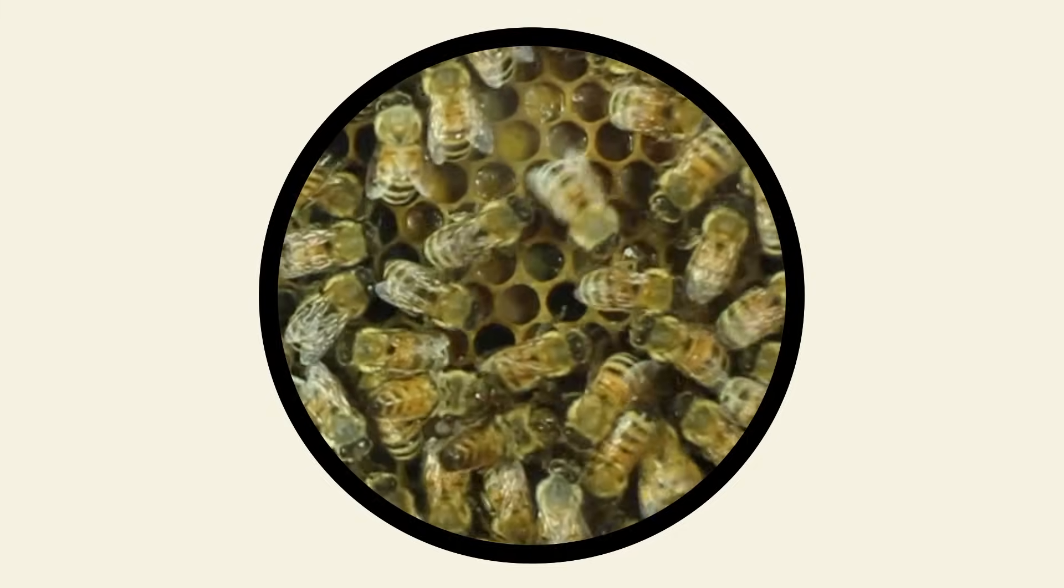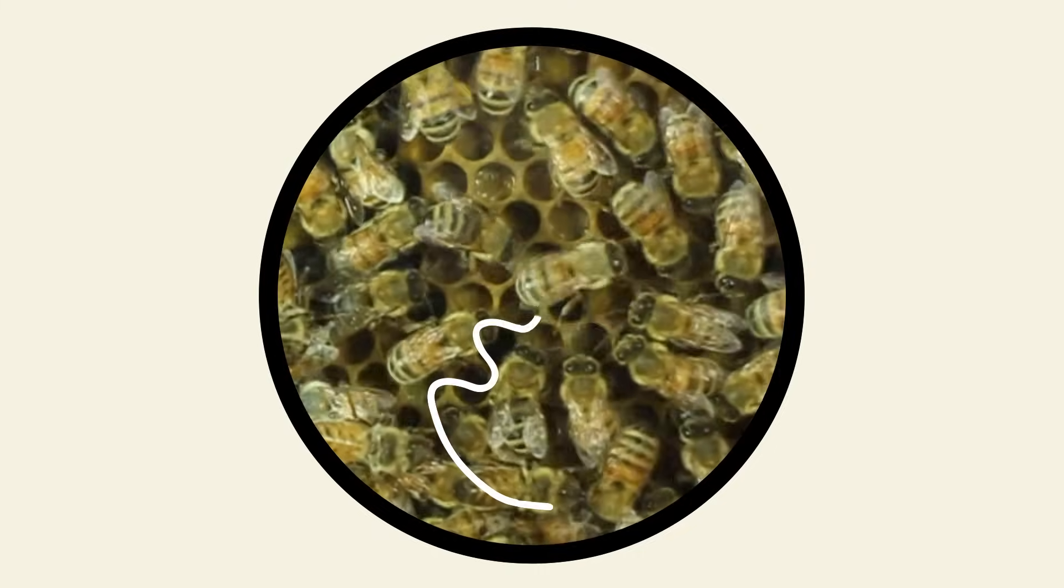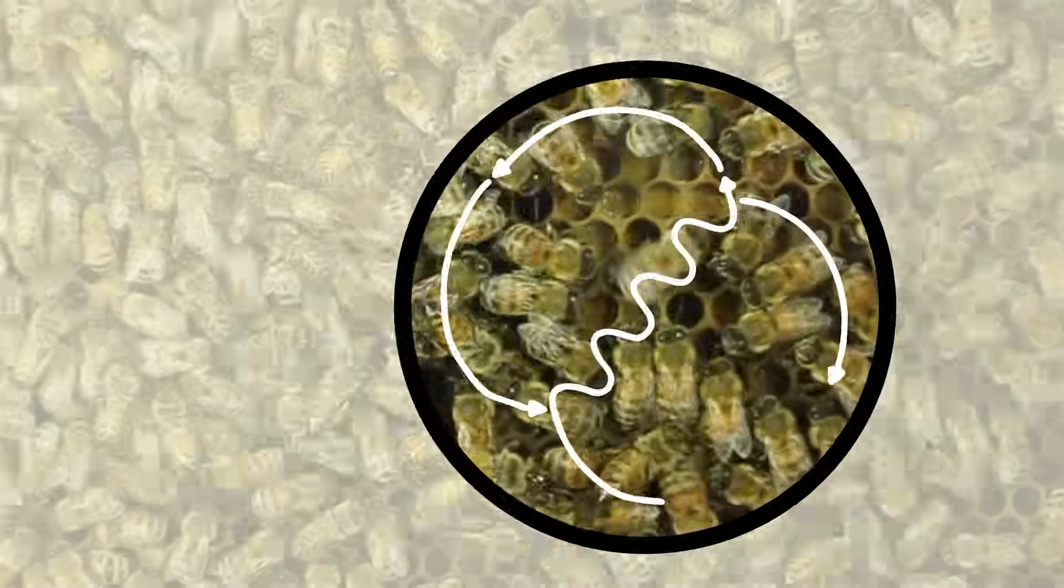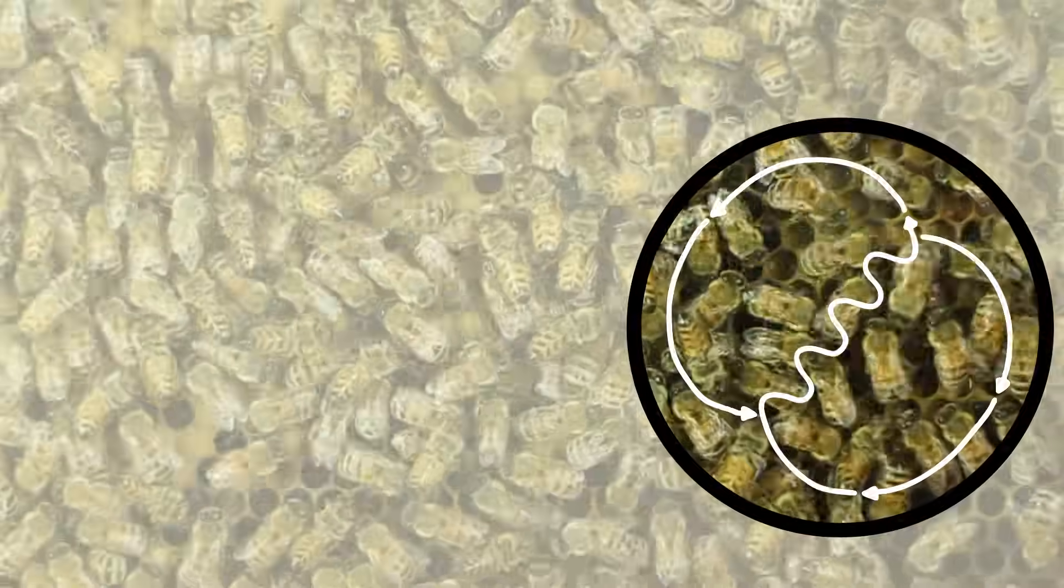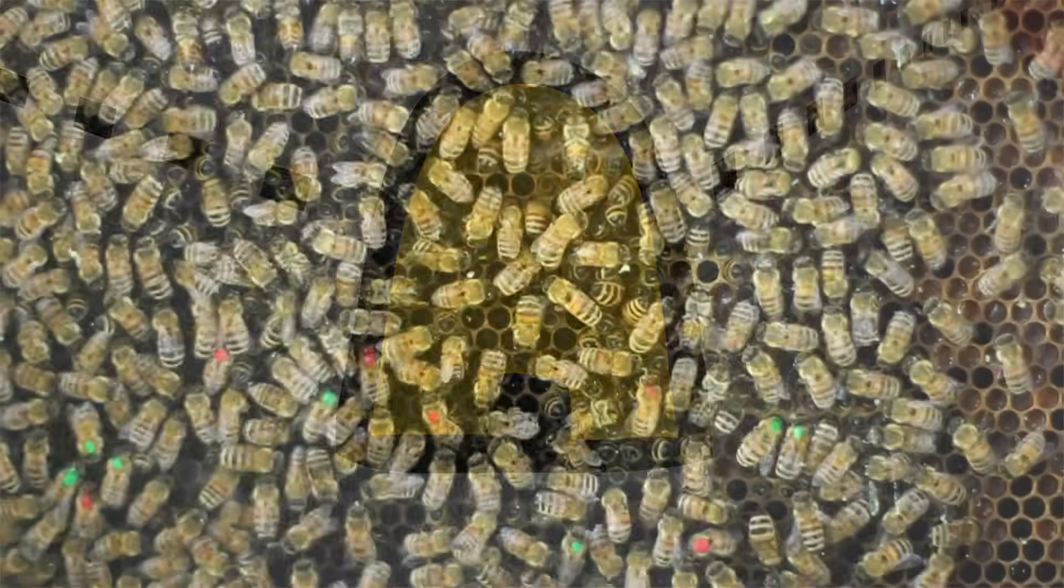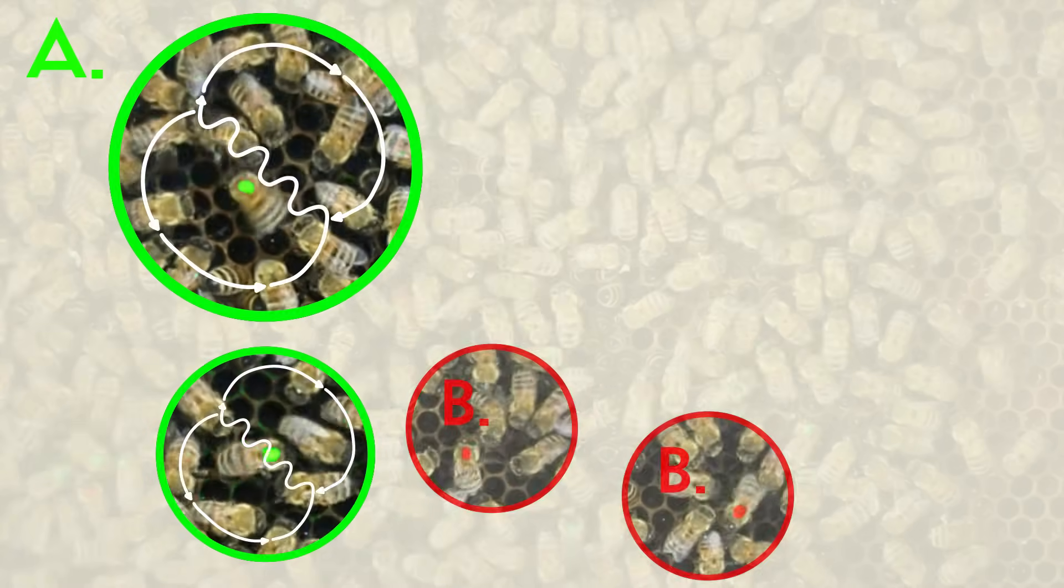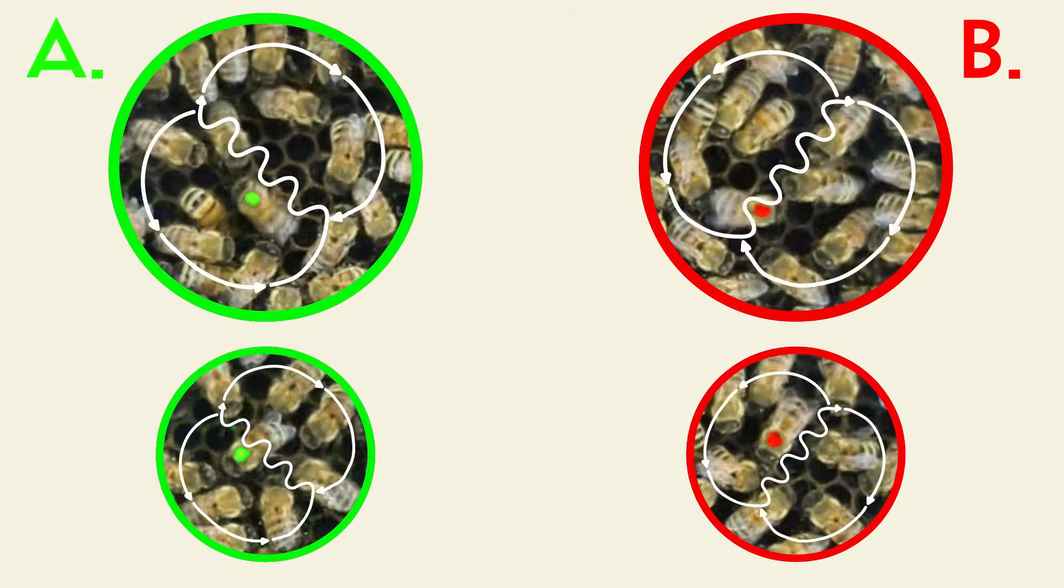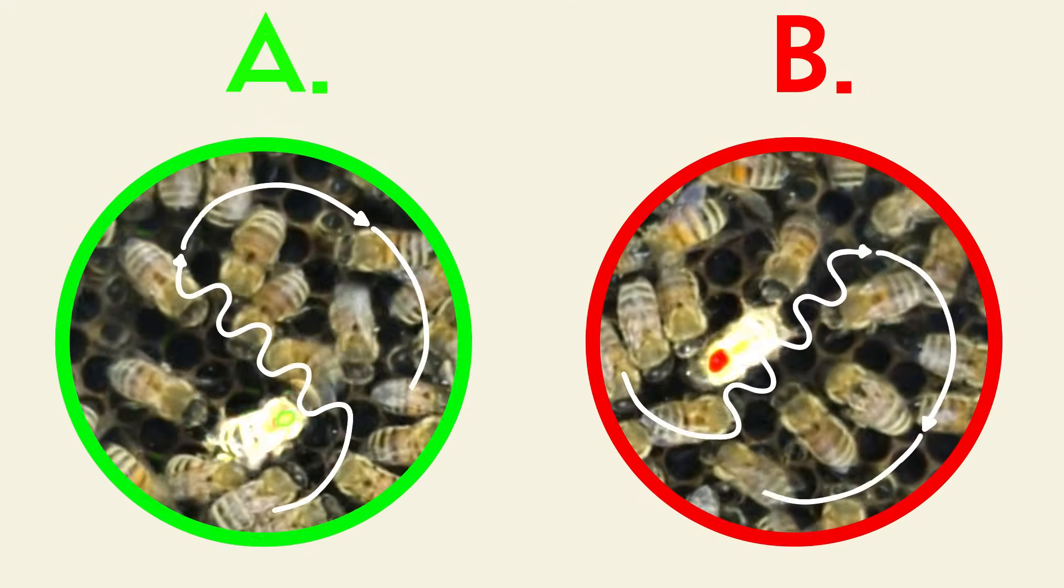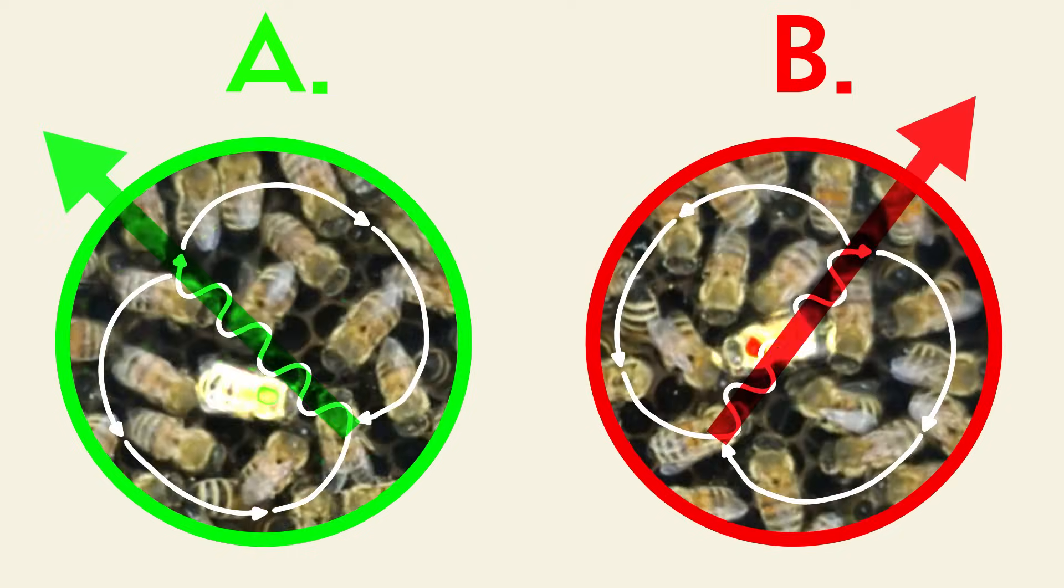Before von Frisch, other scientists had observed that returning bees tended to waggle about excitedly in a figure eight pattern before sharing the collected pollen and nectar with their hive mates. In this two-station experiment, von Frisch noticed that the bees returning from the same feeding source danced differently from bees that arrived from the other location. While both sets of bees perform the classic figure eight dance, the orientation of the dances is offset between the two groups.